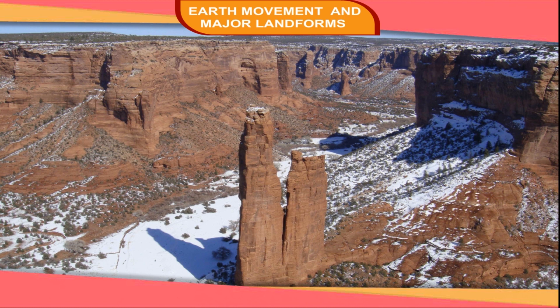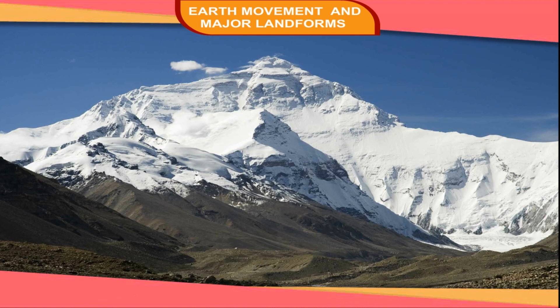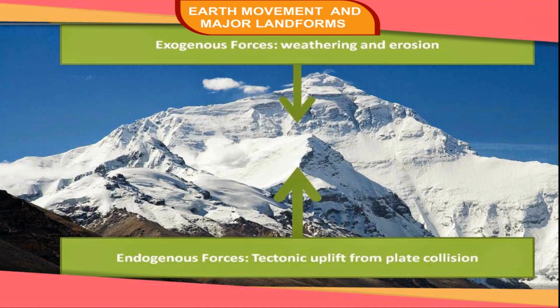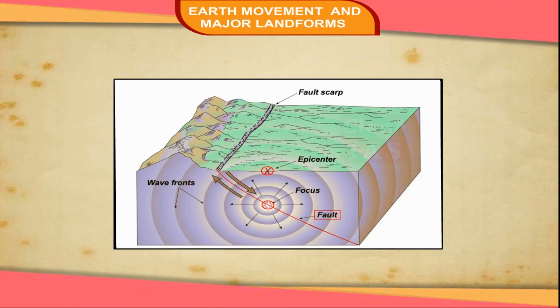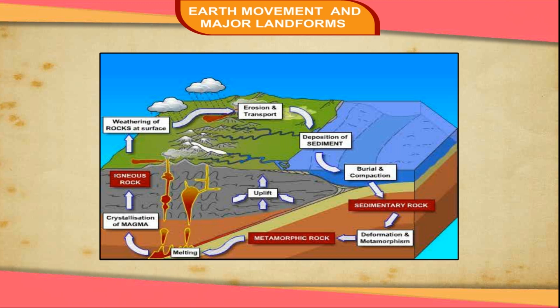Earlier, all the continents formed a single mass. However, under the influence of forces generated within the Earth, they moved away in different directions. Such forces lead to slow Earth movements and sudden Earth movements which modify existing landforms. The forces which originate inside the Earth and bring changes on its surface are known as endogenic forces, while forces which operate on the surface are called exogenic forces. Endogenic forces try to uplift the Earth's surface while exogenic forces try to level it down.